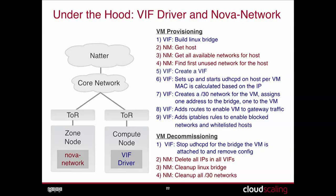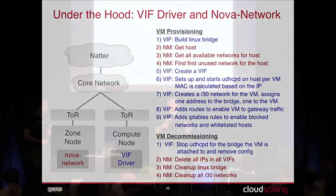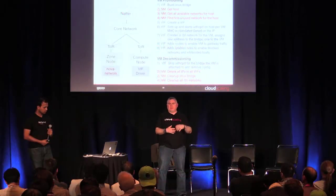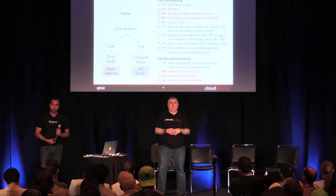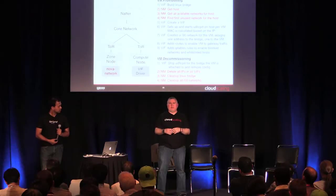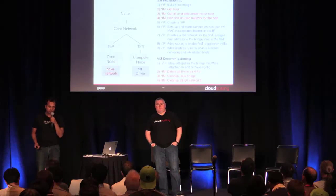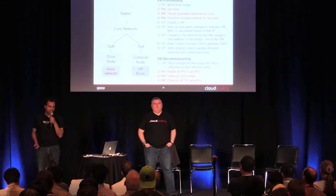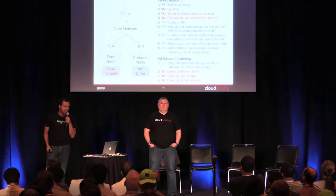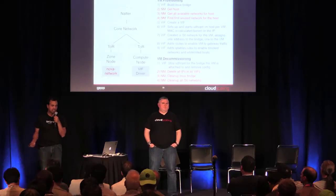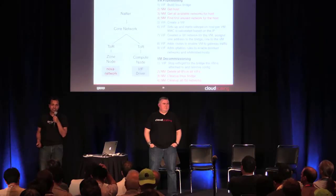We have the ability to block a particular set of networks and whitelist particular hosts in those networks, enabled by adding IP table rules on the compute nodes. This is used to protect the control plane from the data plane — you need multi-layered defense to ensure packets from hypervisors can't reach the actual control plane. When you set up the control plane, the IP address ranges are saved in a centralized metadata store, and during automated provisioning of a hypervisor node, the whitelists and blocked networks are automatically added. When a VM is removed, the VIF driver stops all DHCP processes, cleans up config files, and the network manager deletes all IPs and cleans up Linux bridges.